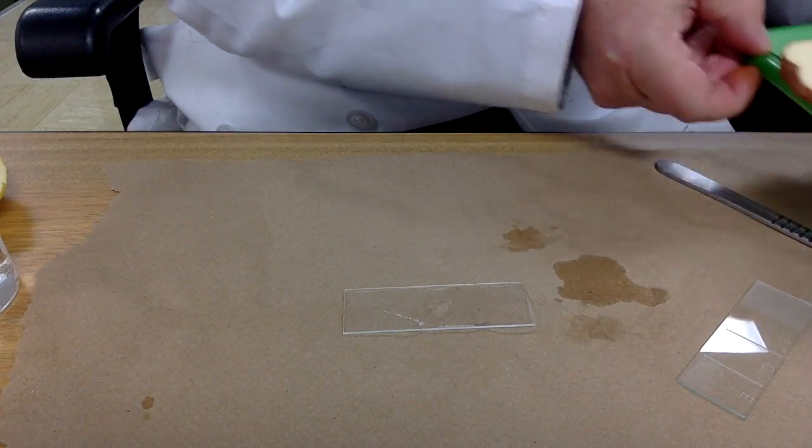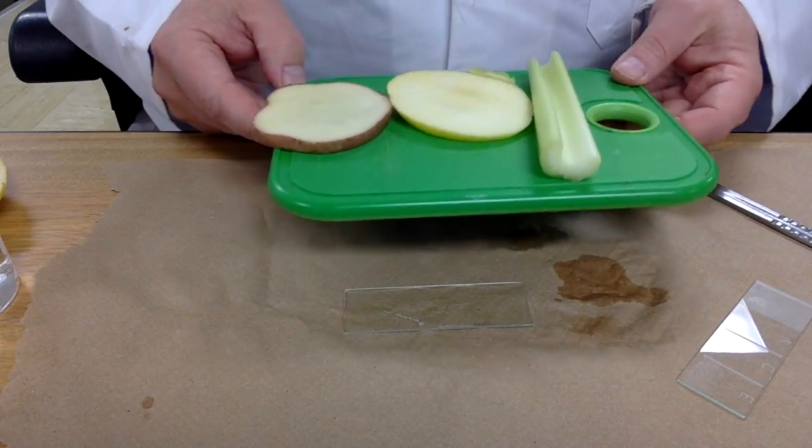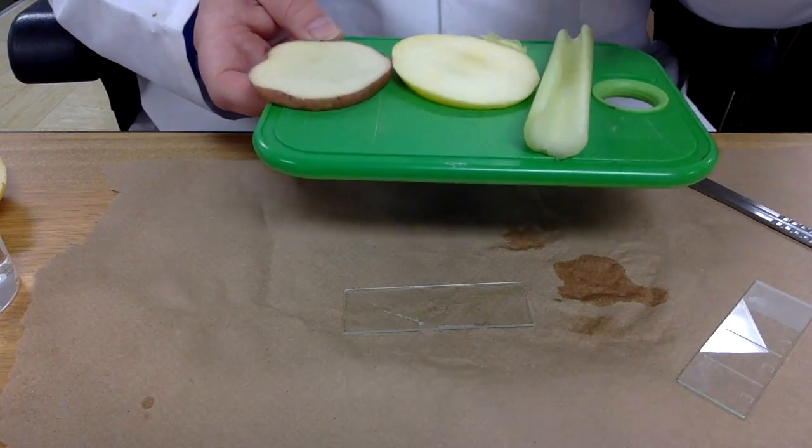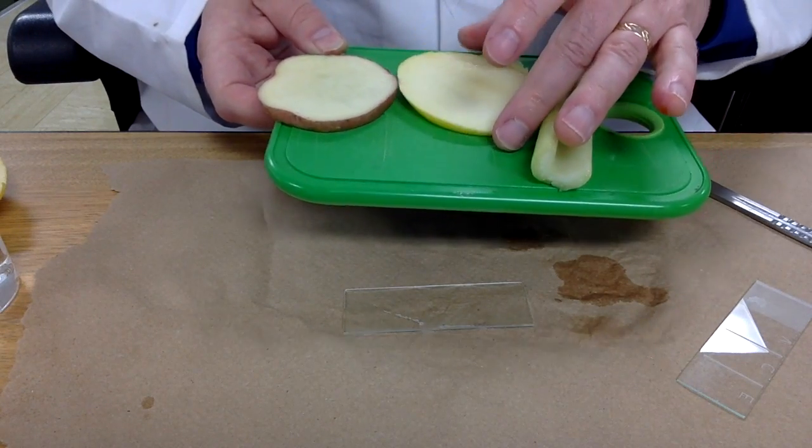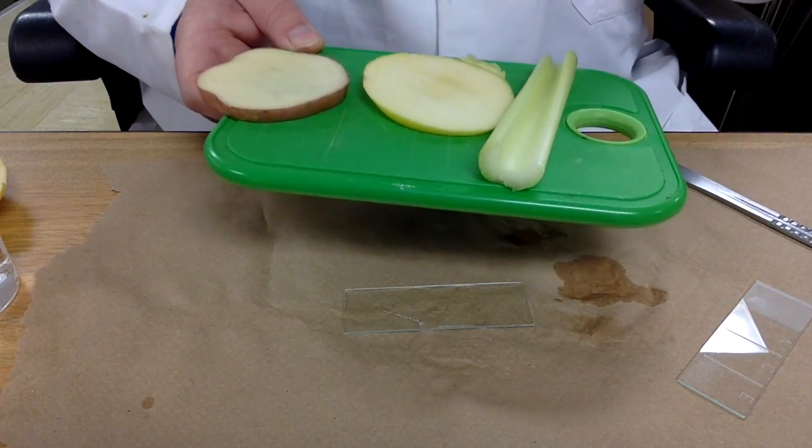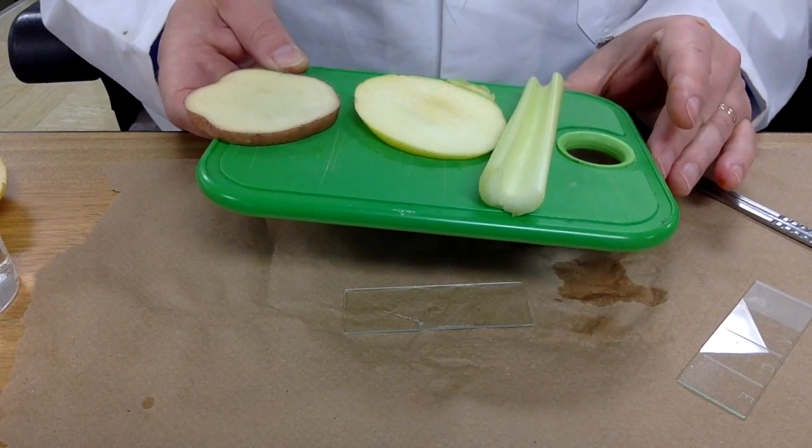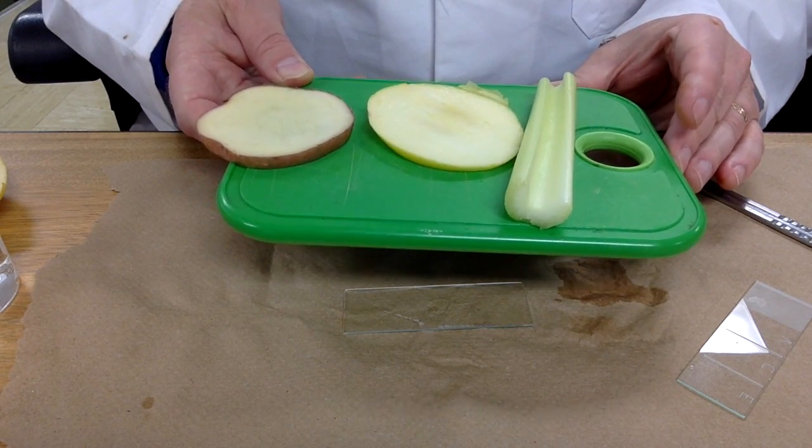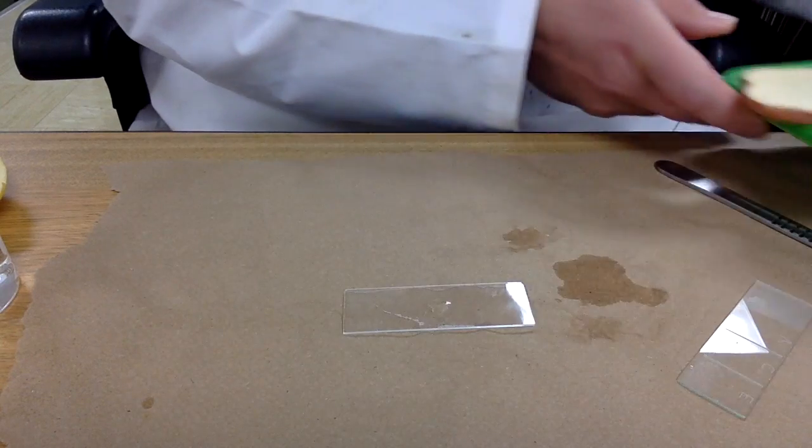You will find at the cutting board stations that we have some celery, some apple, and some potato. The apple has some yellow skin on it today and we have a red potato. You can take opportunities to look at both the skin and the central area of those fruits.